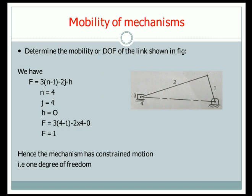The value of h is zero because no links have more than one degree of freedom. Substituting all values in the formula, we get f equals one. Hence the mechanism has constrained motion — it has one degree of freedom. This is how we calculate the degrees of freedom of any given mechanism. In the next class, we shall solve more problems to better understand the calculation of degrees of freedom. Thank you.